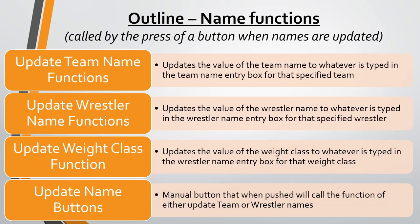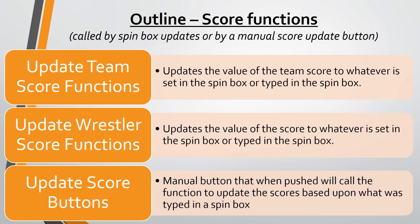The name functions are where the team names and wrestler names will actually be updated. They'll be typed into the entry boxes, and then you hit either the update team name, update wrestler name, or update weight class button depending on what you're updating. The function gets called, retrieves the value from the entry box, stores it in the global variable for that field, and then calls the update text files function to make sure that change ends up on the scoreboard.